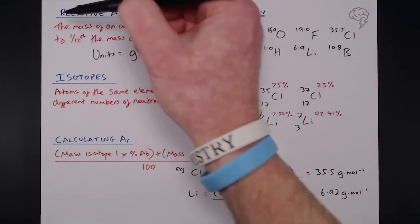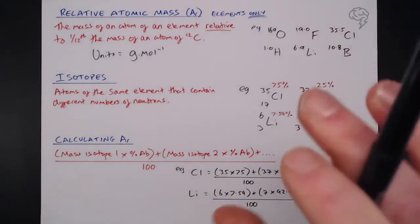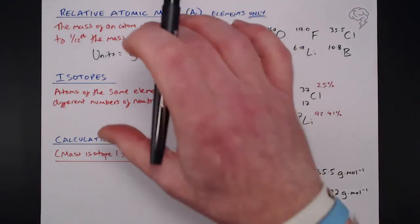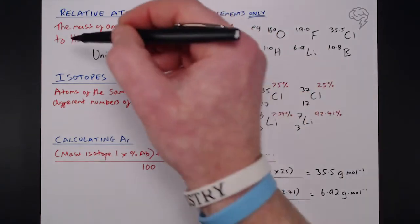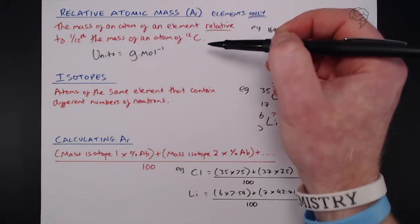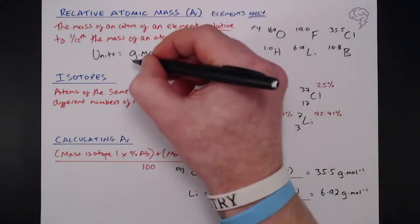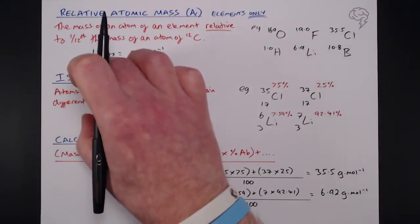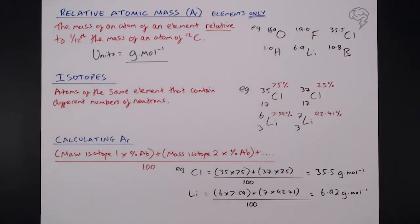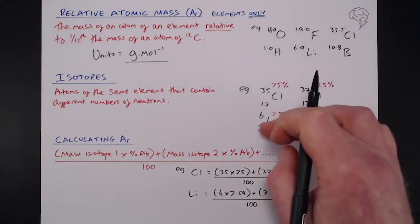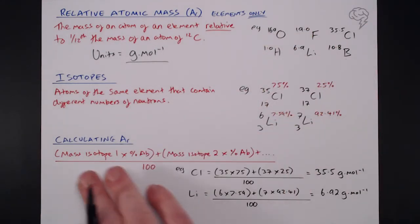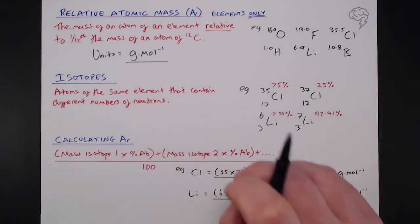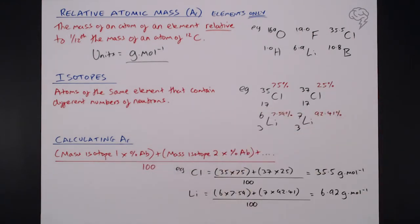So, overall, our relative atomic mass, or AR, deals with elements only. It's the mass of an atom of element relative to one-twelfth of the mass of an atom of carbon-12, and the units are grams per mole. They take into account isotopes, which are atoms of the same element that contain different numbers of neutrons, for example, here. And then, last but not least, you need to know how to calculate your relative atomic mass, given different isotopes and their percentage abundances.